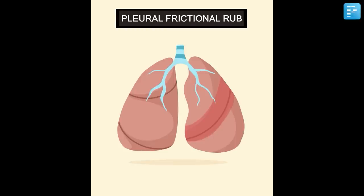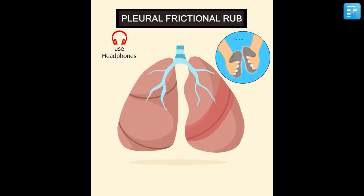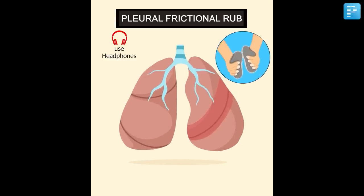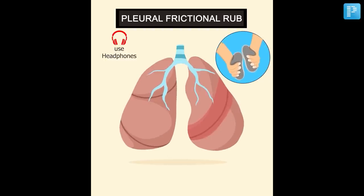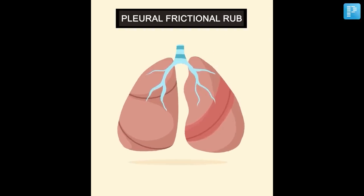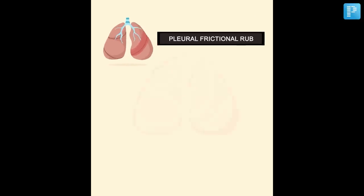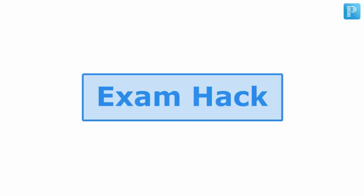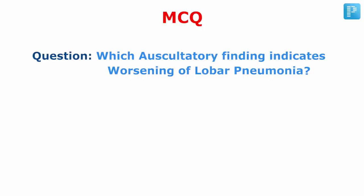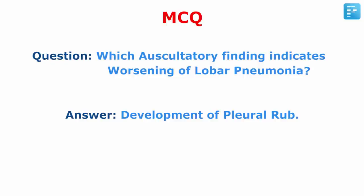Next is the pleural friction rub. The sound is like rubbing stones against each other, and it is due to inflammation of the pleura. The exam hack: if the question asks which auscultatory finding indicates worsening of a case of pneumonia, your answer would be pleural friction rub.